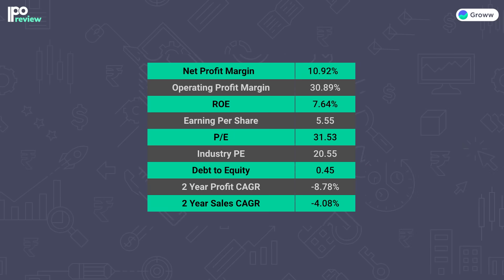Looking at the financial ratios: the net profit margin is 10.92%, the operating profit margin is 30.89%, and the ROE is 7.64%. Earnings per share is 5.55 and the PE ratio of the company is 31.53, compared to the industry PE of 20.55. The debt to equity ratio is 0.45, which is quite manageable. The two-year profit CAGR is minus 8.78% and the two-year sales CAGR is minus 4.08%.